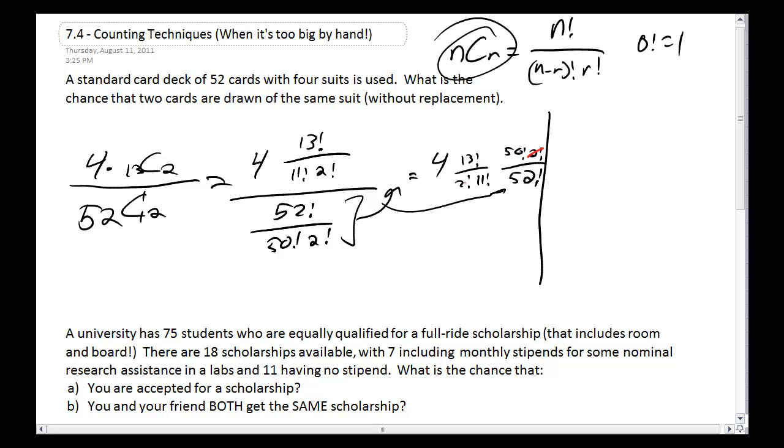Next, some cancellation happens. The two factorials cancel out. Also, 11 factorial cancels with part of 13 factorial and just leaves me with 13 times 12. And 50 factorial cancels with most of the 52 factorial, leaving me with just 52 times 51. So now, for my fractions, I have 4 times 12 times 13. And on the bottom, I have 52 times 51.